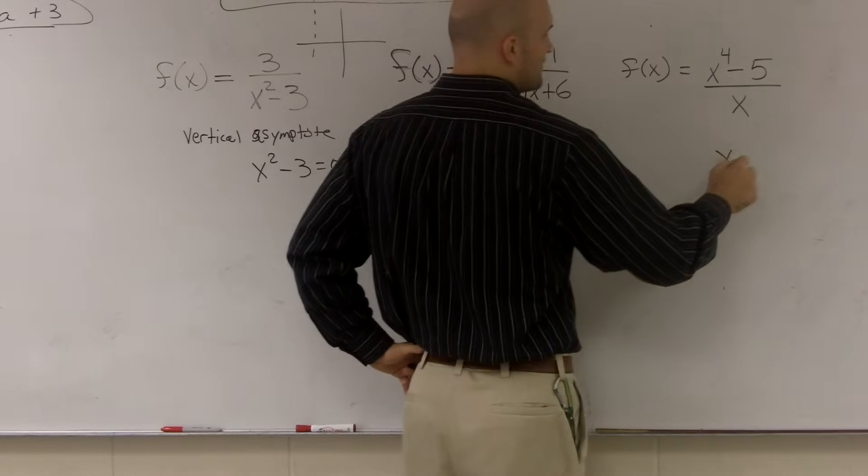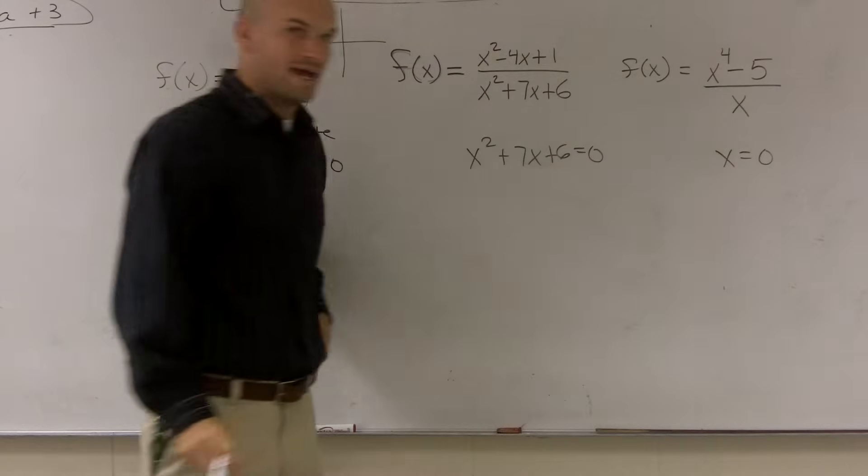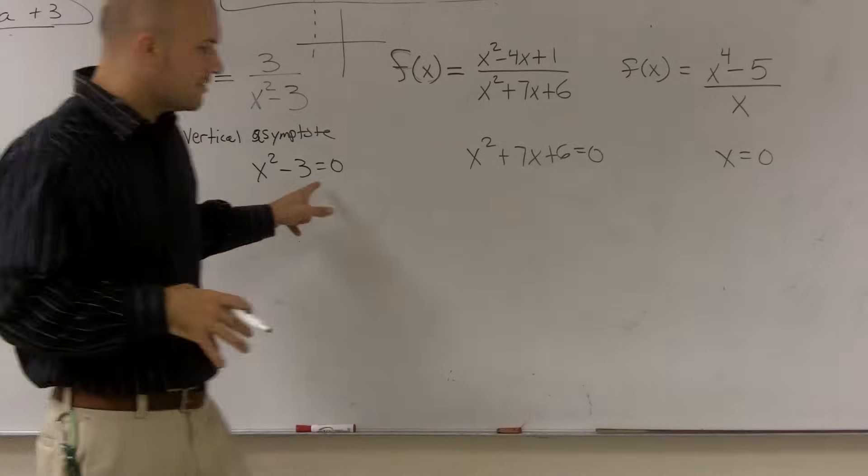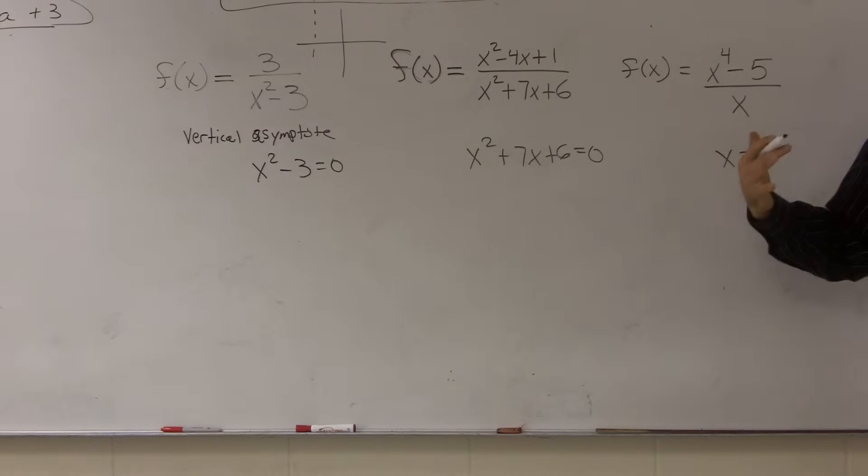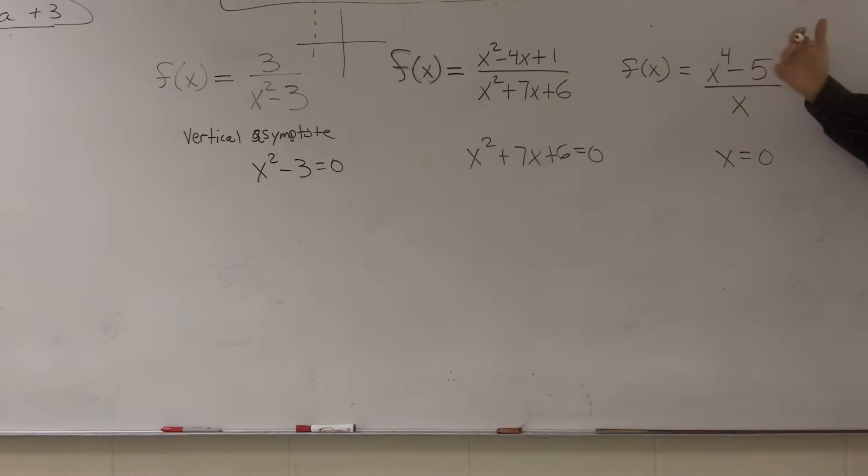And this is just very similar to finding the domain. The reason why is, remember, whatever values make it zero, that's not part of my domain. And since it's not part of my domain, it's not an x value in my function. Or my function is not defined for that value. Therefore, it's what we call an asymptote.